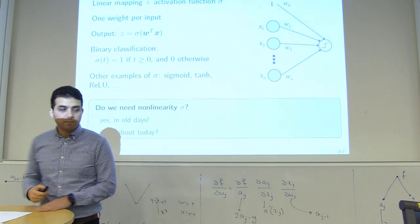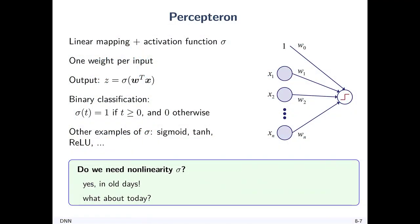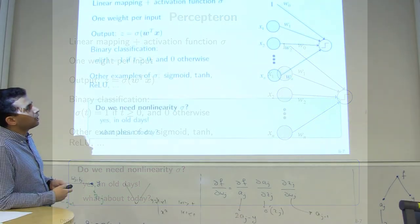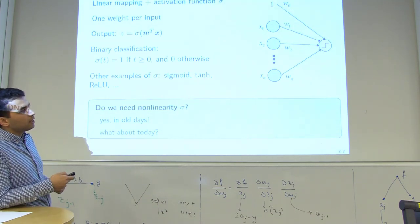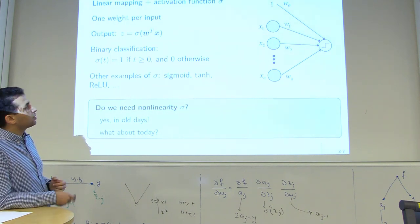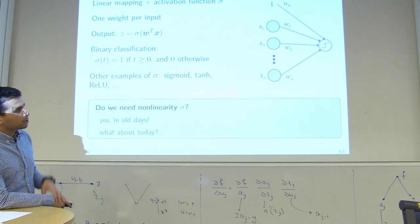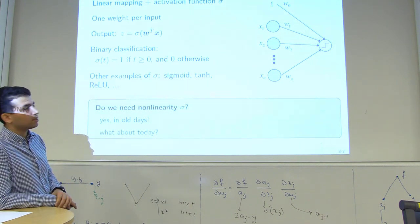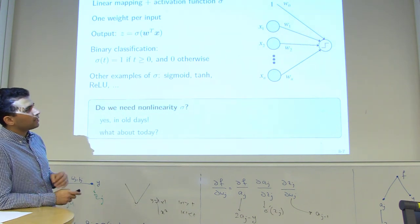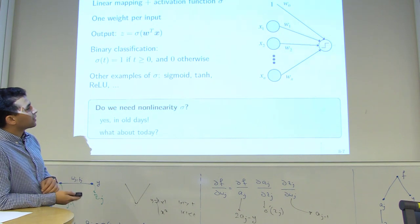Moving to the basics of neural networks, starting with the perceptron from the 1950s: it's a linear mapping plus activation function — W^T x + W_0. You can augment x by adding a 1, making it W^T x in general. The output is sigma(W^T x) — one weight per input followed by a nonlinear activation function sigma.